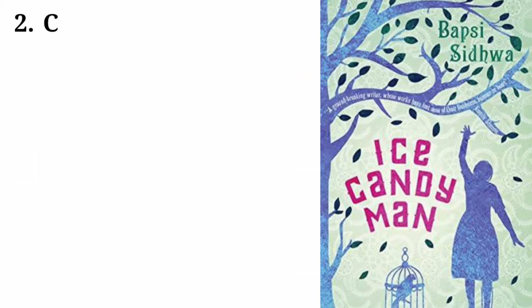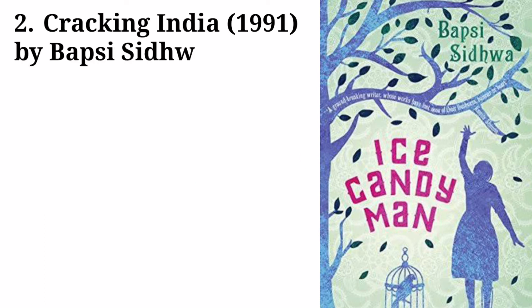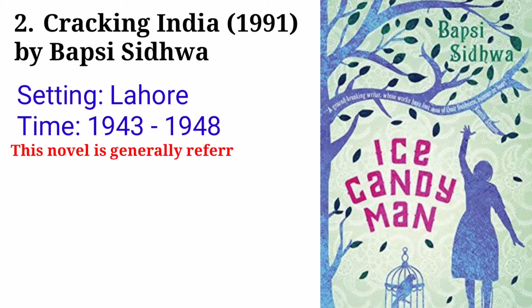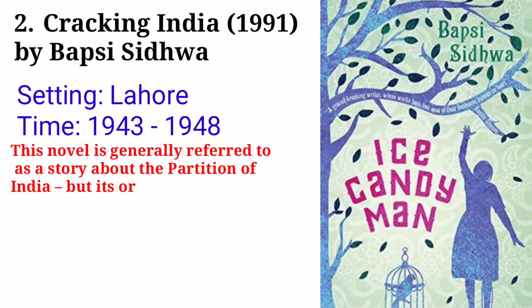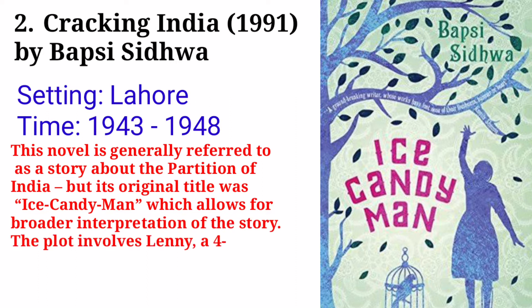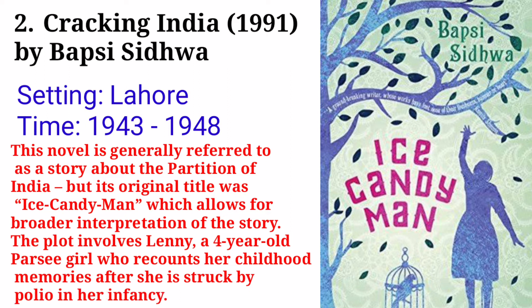The second novel is Cracking India by Bapsi Sidhwa. The novel is set in Lahore and covers the period from 1943 to 1948. It is generally referred to as a story about the partition of India, but its original title was Ice Candyman, which allows for a broader interpretation of the story. The plot involves Leni,